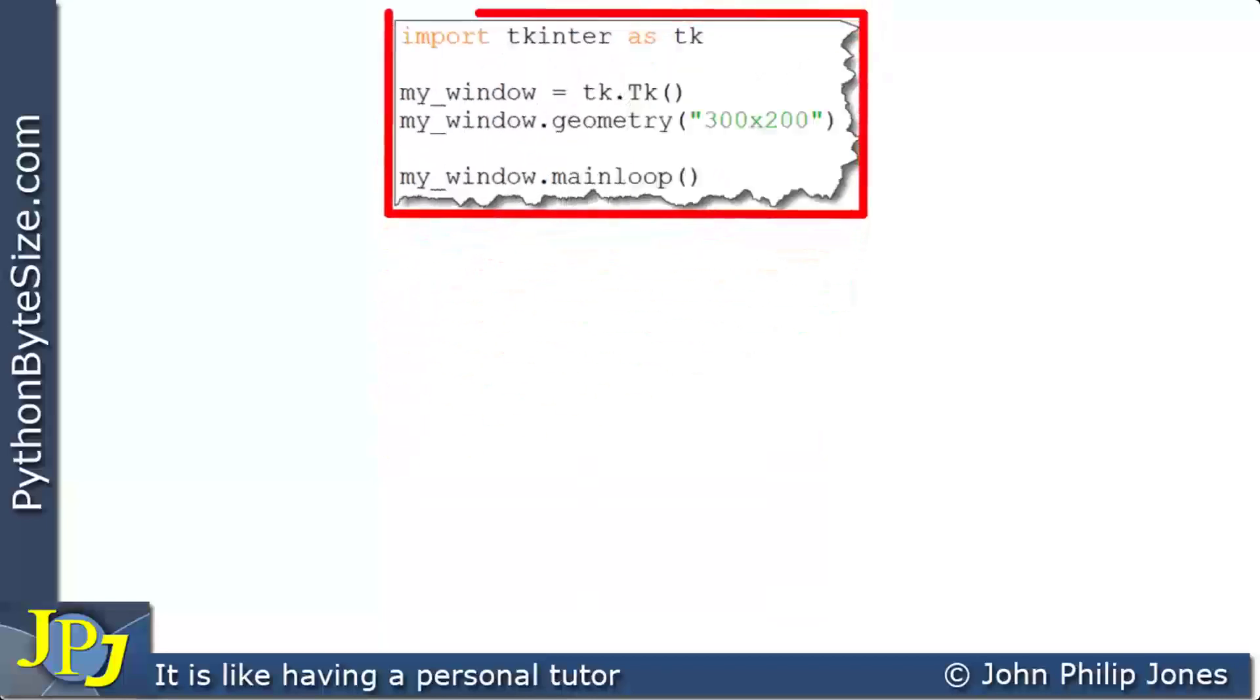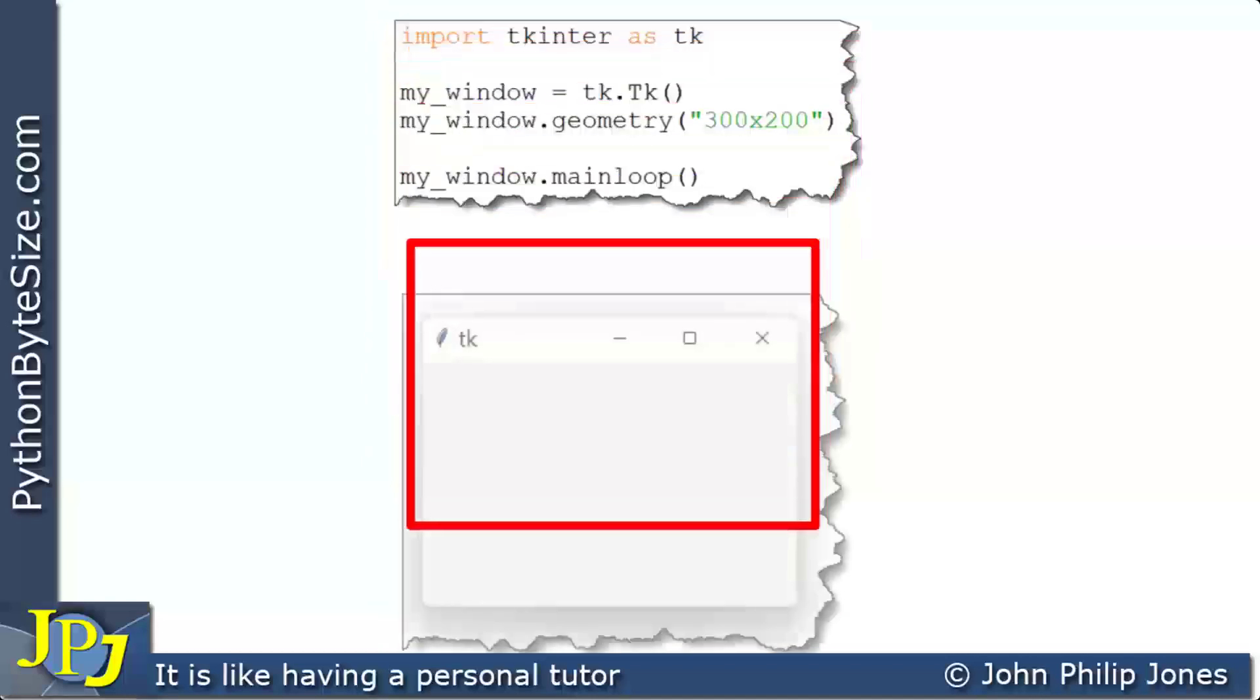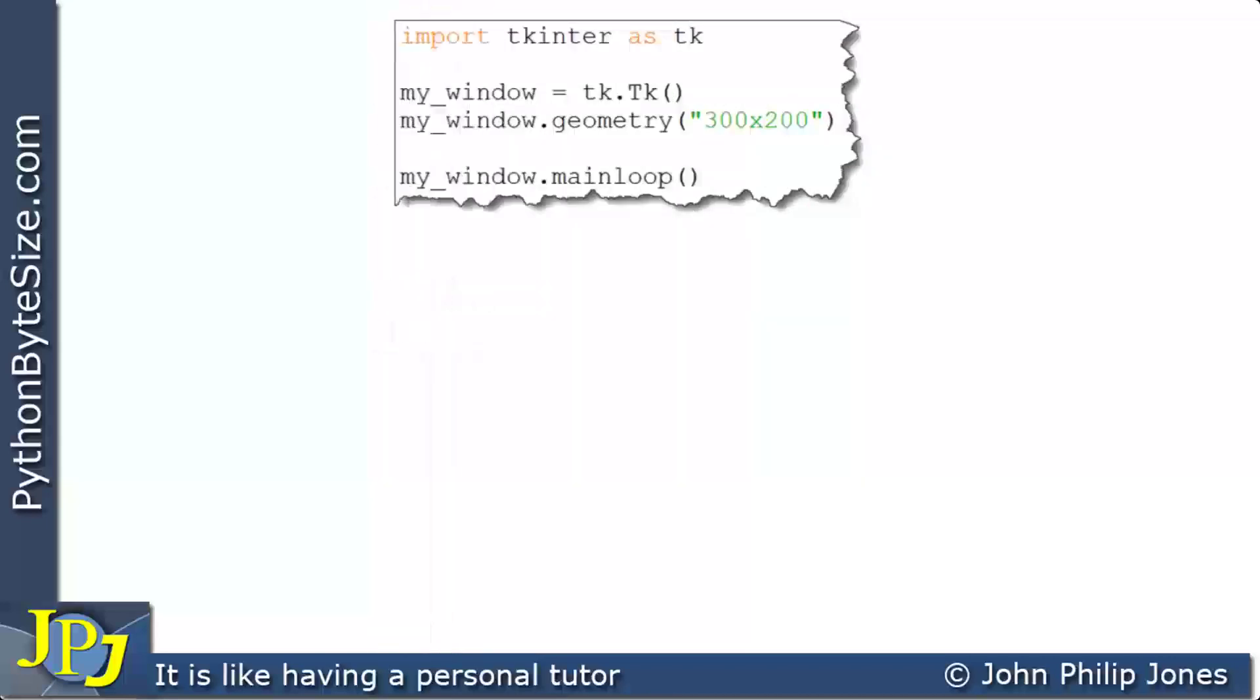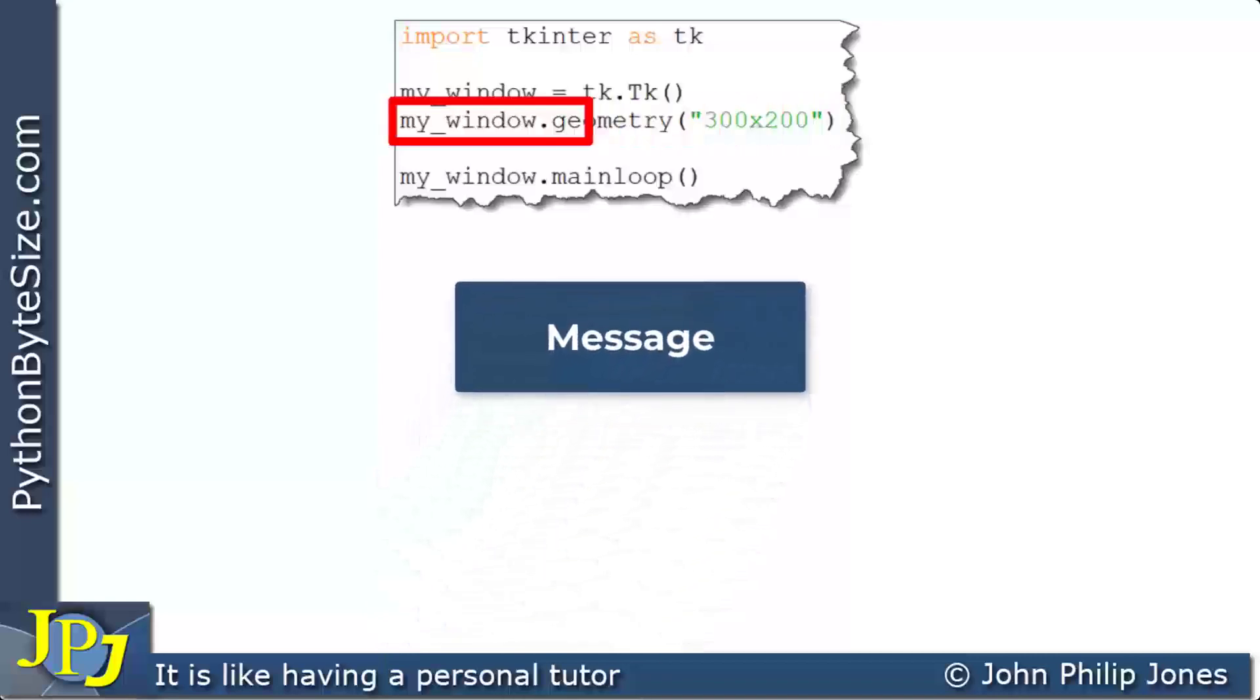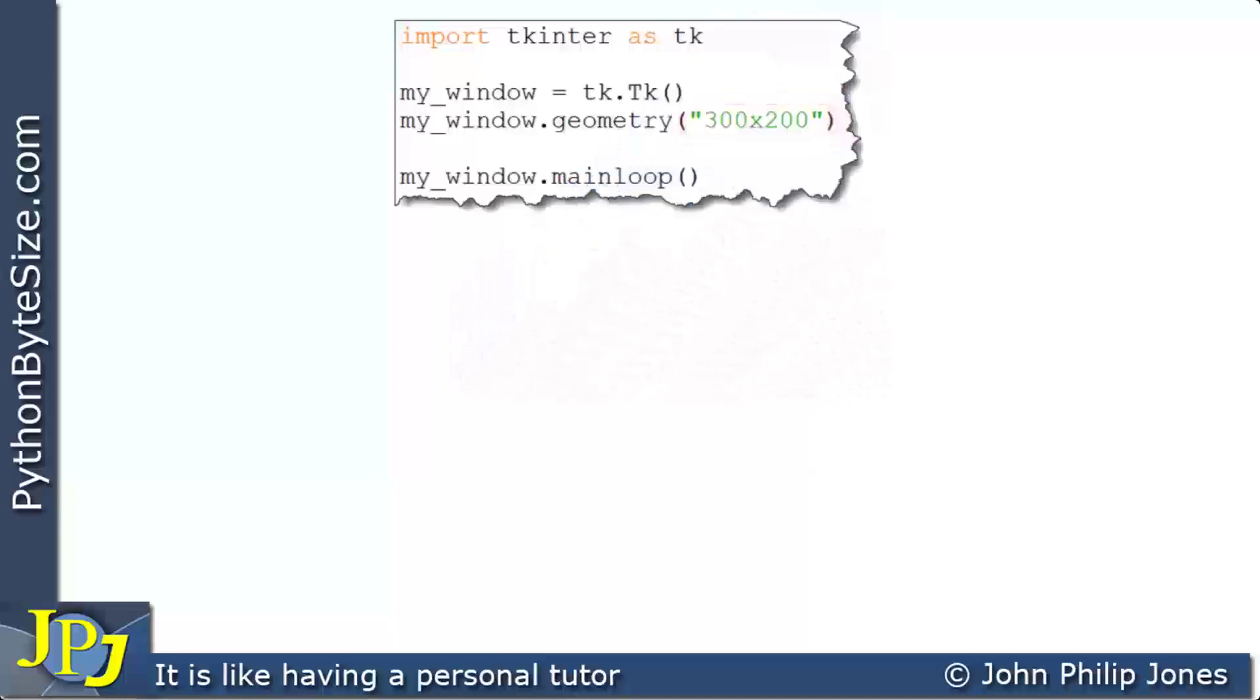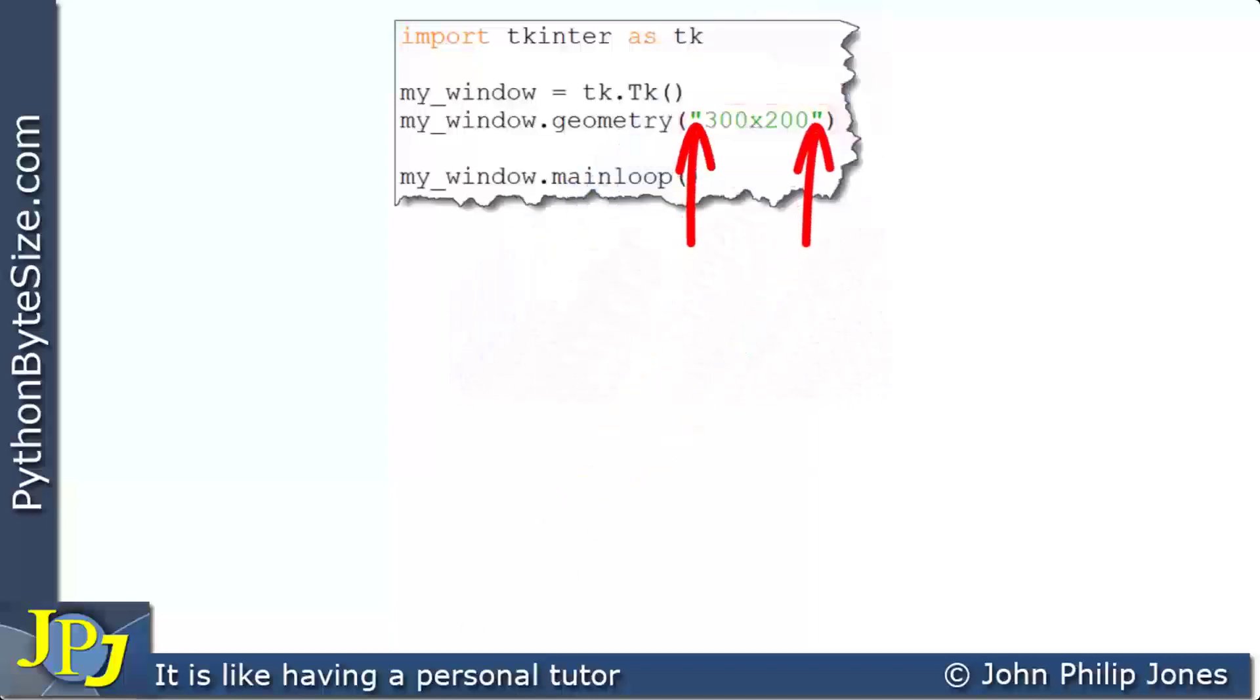When this program executes, we're going to get a TKinter window. Object-oriented terminology will indicate that this program statement is a message to this window that will invoke this method, and this is the argument that's passed to the method. It is clear because of the quotes that the argument is a string.